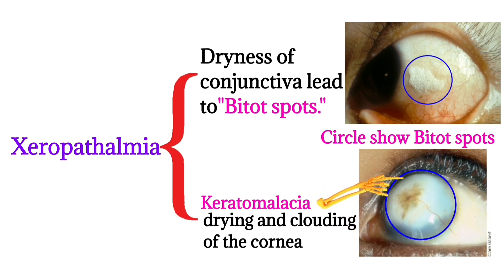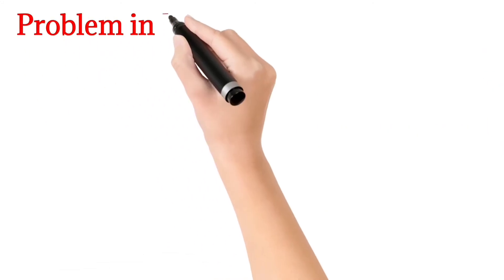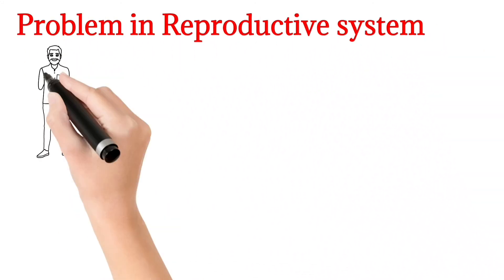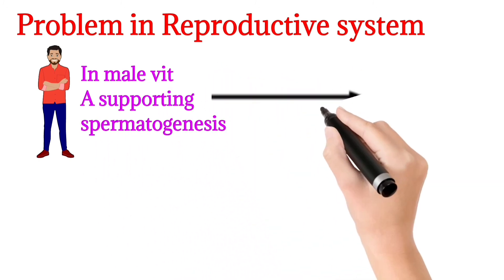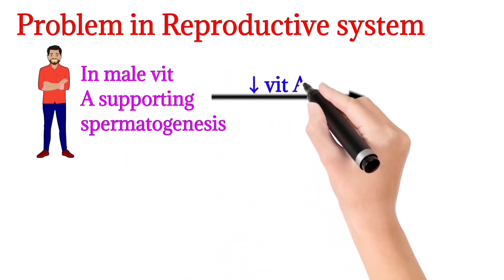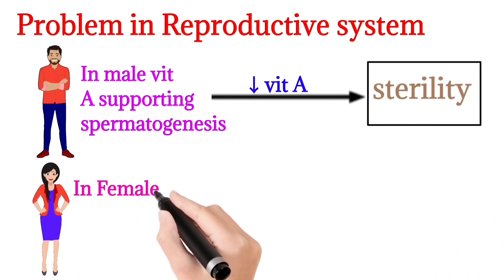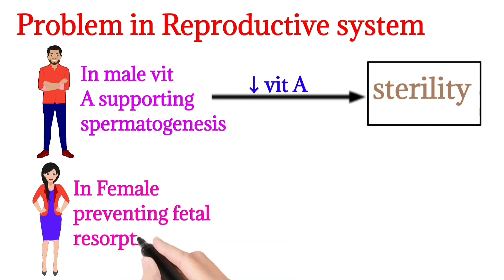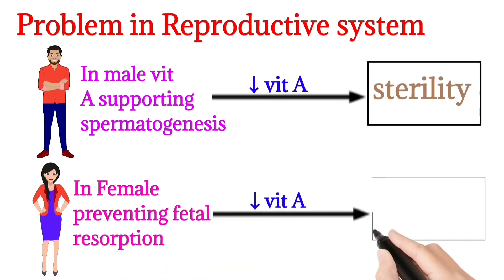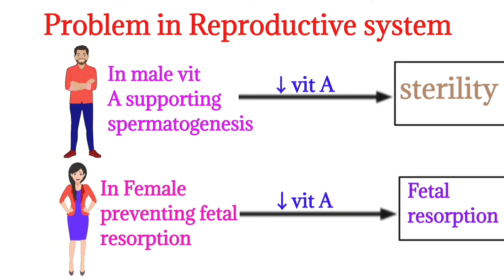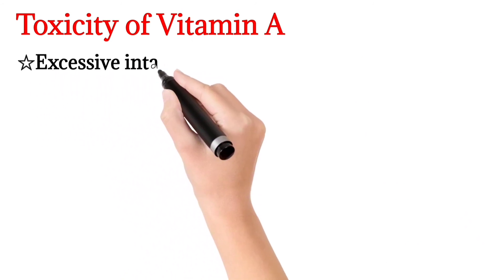Problems in the reproductive system: in males, Vitamin A deficiency can lead to sterility because it supports spermatogenesis. In females, Vitamin A deficiency can lead to fetal resorption because Vitamin A prevents fetal resorption.